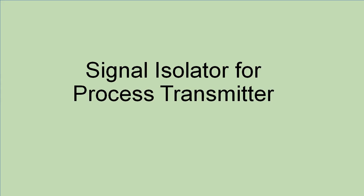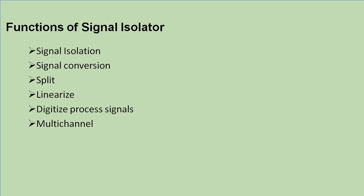In this video, I will discuss signal isolators used for process transmitters. The functions of the signal isolator include signal isolation, signal conversion, signal splitting, signal linearization, digitizing the process signal, and multi-channel applications. Out of all these, the basic function is signal isolation. In addition to signal isolation, the remaining functions can also be achieved by the signal isolator.